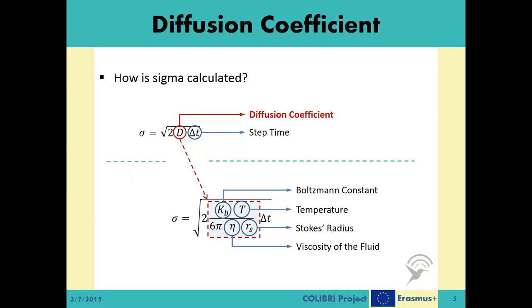This is due to the fact that the hotter the environment, the faster the molecules in the environment become, and this increased speed eases the movement of the object. In contrast, the viscosity defines the resistance of the environment to changes. Therefore, the higher the environmental viscosity, the slower the movement of the object inside the environment. Lastly, the size of the moving object affects the sigma value. Stokes' radius roughly describes how big the object is, and as a result, sigma is also inversely proportional with this Rs parameter. Considering a 3D environment, since the sigma value depends only on these variables, it is usually the same for each dimension of the movement.